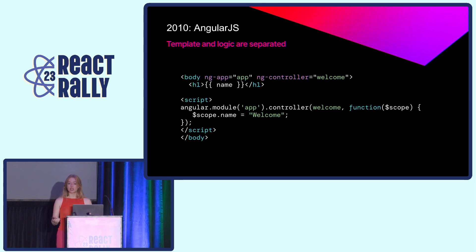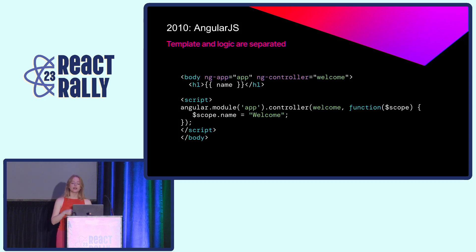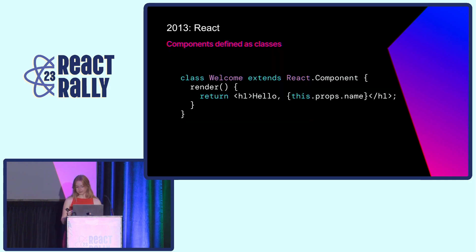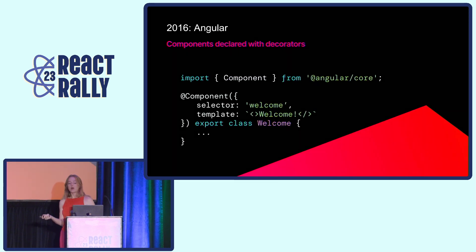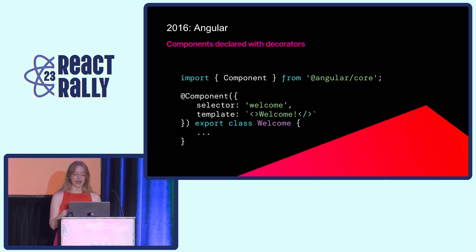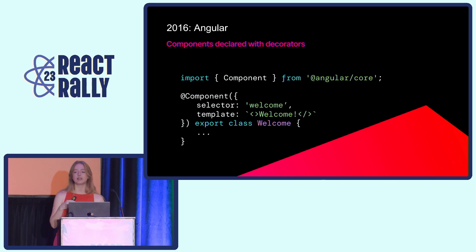In 2010, AngularJS, the predecessor of current-day Angular, was the first framework on the web to put declarative model-driven UIs on the map. In AngularJS, template and UI logic was separate. It wasn't until React followed a few years later, drawing from AngularJS's approach, that the idea of components were introduced. React introduced a way to abstract the template and its UI logic into something called a class with a render function. Modern-day Angular, launched three years later, was inspired by React's component classes, and introduced the concept of the component declared with decorators.